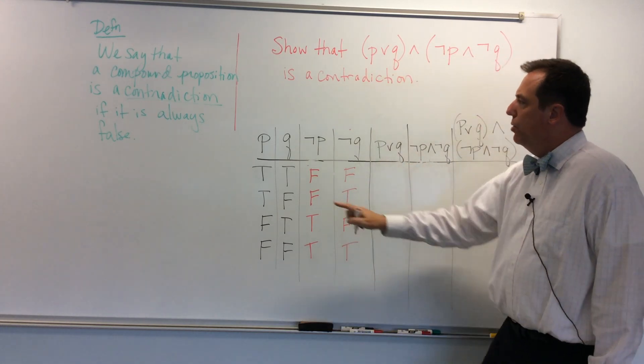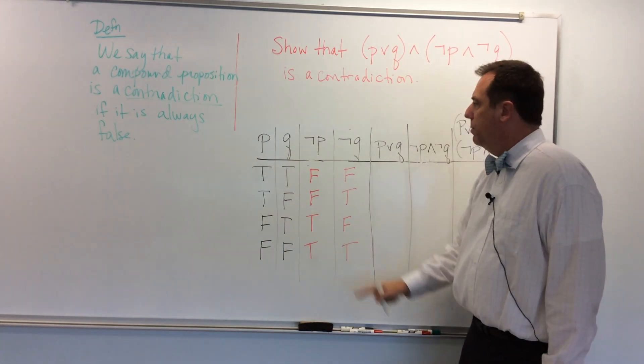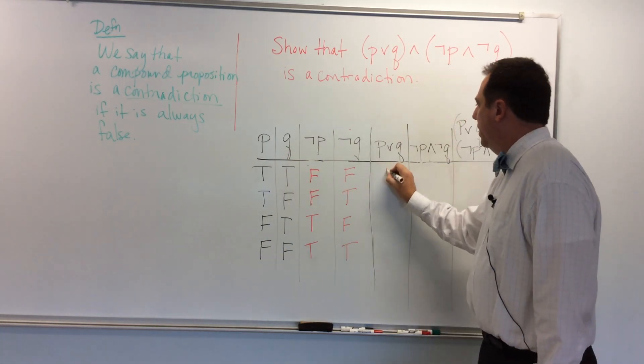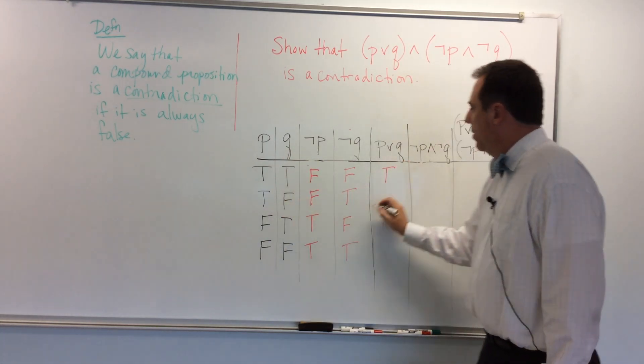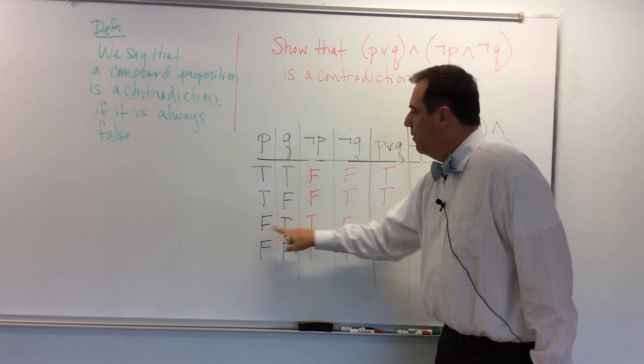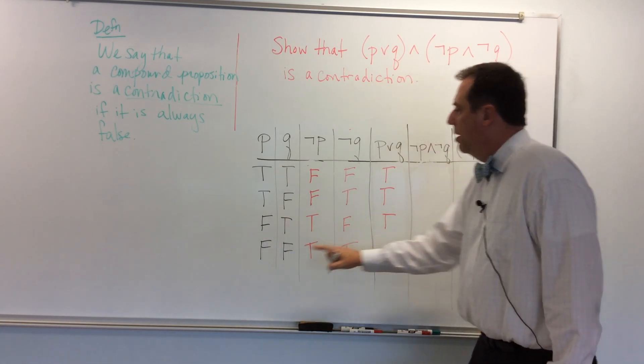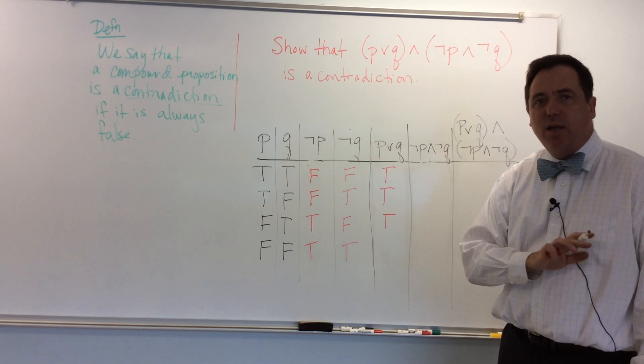P or Q, I go back to these two first columns. True or true means true. True or false definitely means true. False or true means true. False or false means false.